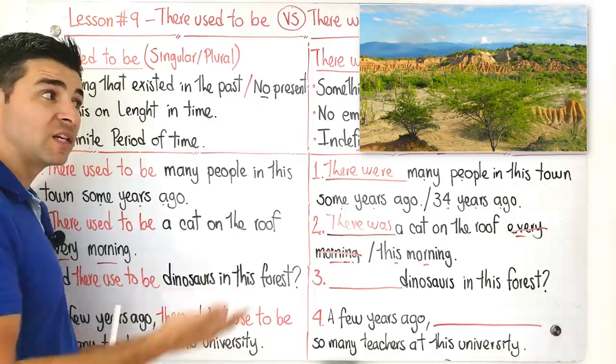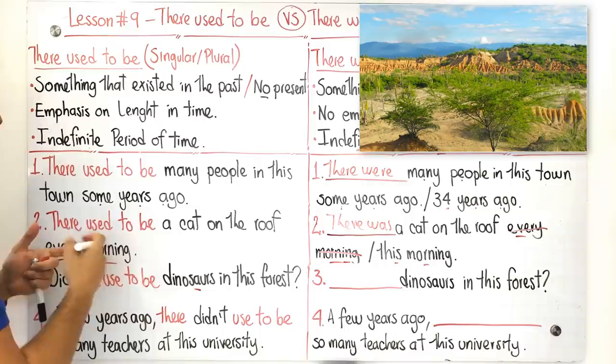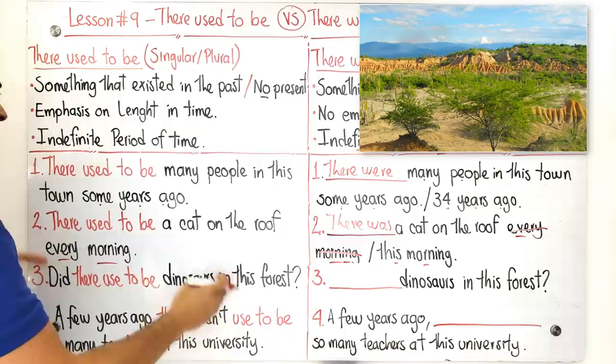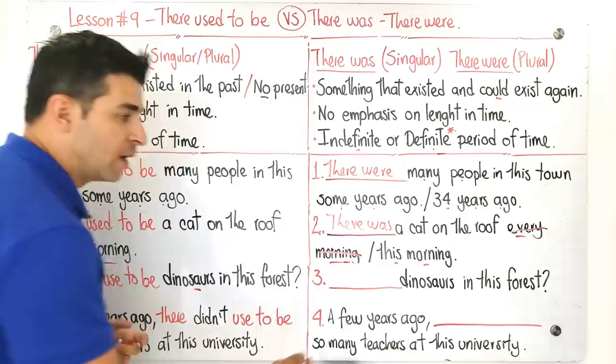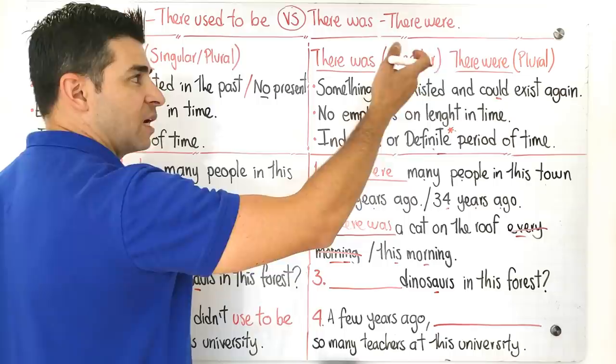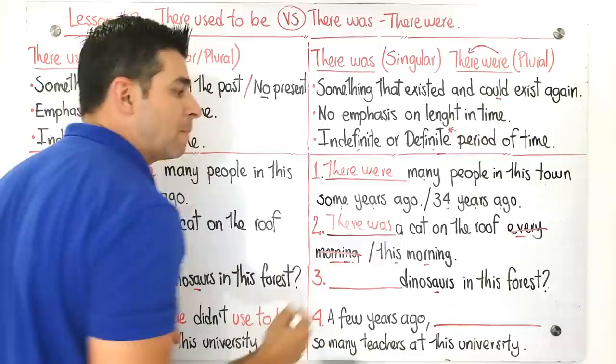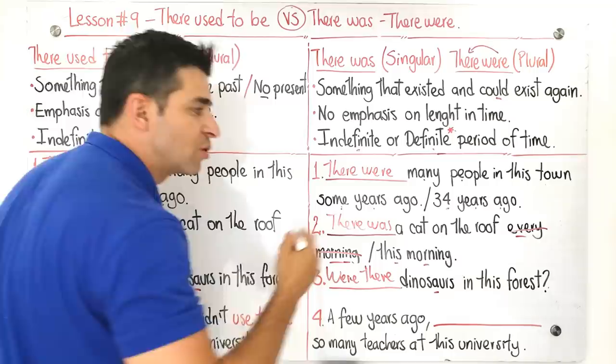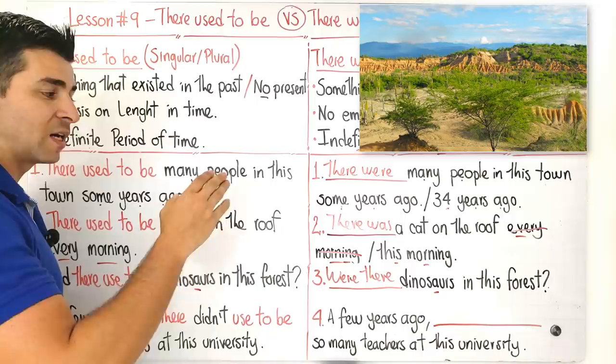Look at this exercise number three and this is the context guys. Did there used to be dinosaurs in this forest? We're talking about dinosaurs. Dinosaurs won't exist anymore. They existed in the past, not in the present. That's why I can use there used to be with no problems. We're talking about the emphasis on length in time and in here in the sentence that we have we don't have a period of time but it doesn't matter. So we don't have problems with this. Now we're going to adapt this sentence into a there was and there were sentence. Guys, we're talking about dinosaurs, which is the correct option here? In here is there were. But I can't write there were here. I have to adapt it. In this case, as this is a question, so I have to move were to the beginning. Were there dinosaurs in this forest? That's a very correct sentence. But according to the context in itself, this wouldn't be used here.